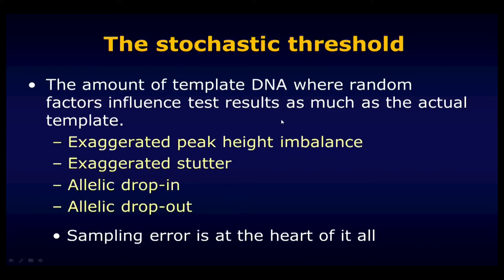All of these stochastic effects begin to occur once we're trying to generate results below what's known as the stochastic threshold. There's a certain level of input template DNA that, once you get beneath it, stochastic effects begin to dominate. There's still some ongoing debate as to what the stochastic threshold actually is, but pretty much everybody agrees that once you're below 100 picograms of template DNA, we're at risk of experiencing these stochastic effects.